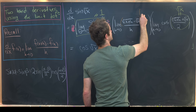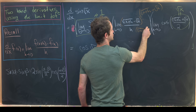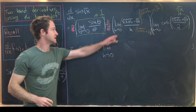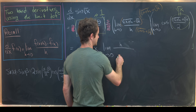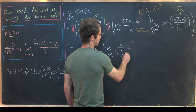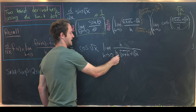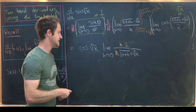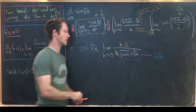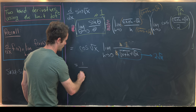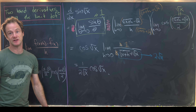The standard trick is to multiply numerator and denominator by (√(x+h) + √x). That produces a difference of squares in the numerator: (x+h) - x = h. The denominator becomes h·(√(x+h) + √x). The h's cancel, and as h goes to zero the denominator approaches 2√x. So the limit equals 1/(2√x), giving a final answer of cos(√x) / (2√x) — exactly what the chain rule predicts.